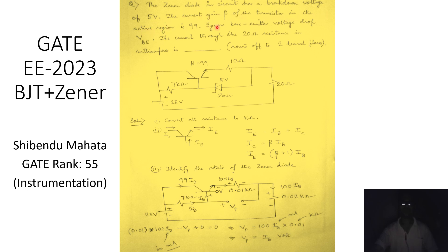This is a GATE problem from analog electronics that appeared in the electrical engineering paper in 2023. The zener diode in the circuit has a breakdown voltage of 5 volts. The current gain beta of the transistor in the active region is 99. Ignore the base-to-emitter voltage drop VBE. The current through the 20 ohm resistor in milliampere is to be found, rounded to two decimal places.